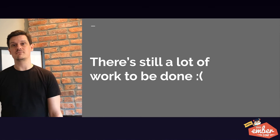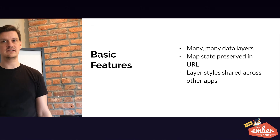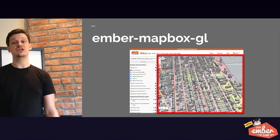Case study: Zola. Back to Zola — not the wedding app. Basic features: many, many data layers, map state preserved in URL, layer styles shared across other apps, monthly data updates. So we need all of these things. The easiest way to jump in for us was to use Ember Mapbox GL. It's simply a bindings layer on top of the core Mapbox GL.js library, providing a really nice declarative developer experience.